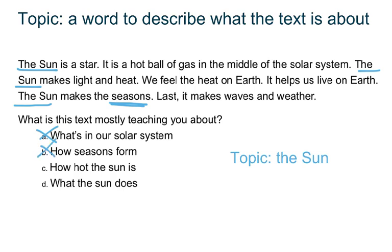Choice C says 'how hot the sun is.' I look back in the text to check. The text does mention that the sun is hot, but it does not tell me how hot. Choice C is wrong — it is about the right topic, the sun, but does not actually describe the text. Choice D says 'what the sun does.' I look back at the text. The text gives lots of examples of what the sun does. It says the sun gives us warmth and even makes the seasons. Choice D is correct.